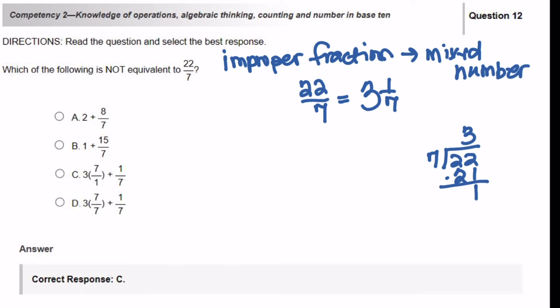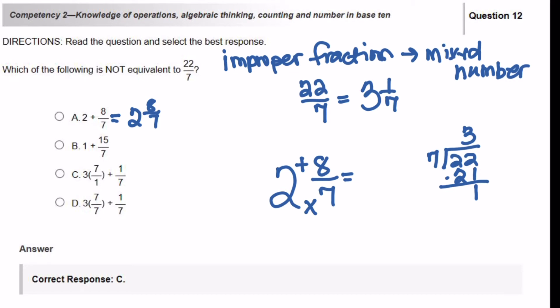The first one: 2 and 8 over 7. A mixed number is an addition problem of a whole number and a fraction. You can change this mixed number to an improper fraction by multiplying the denominator times the whole number and then adding the numerator. So 7 times 2 is 14, and if I add the 8, I get 22. So this is 22 over 7 — is that equivalent? Yes it is, so I do not want this answer choice.